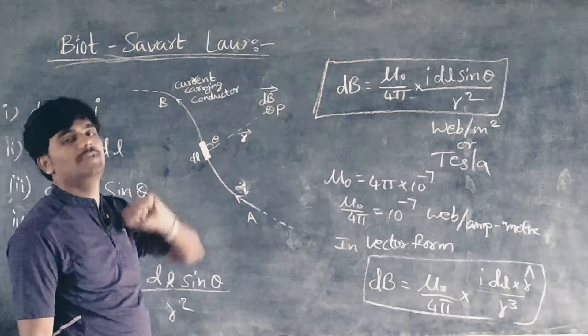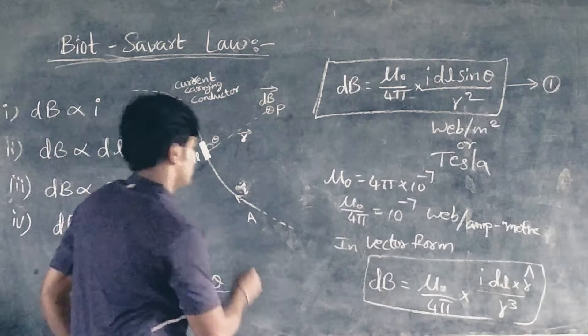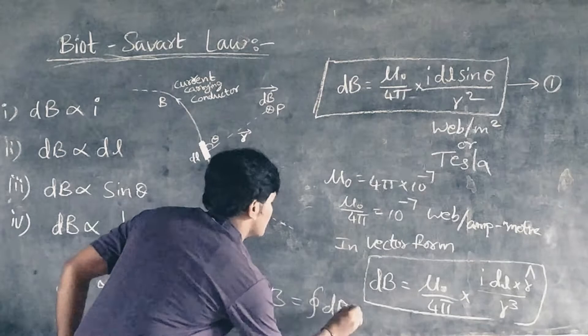Suppose this is equation 1. The resultant field B can be computed by integrating equation 1, that is B equals integral dB. So this is about the Biot-Savart's law.